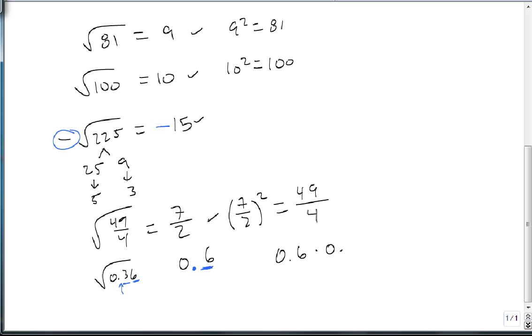And notice the 0.6 times 0.6, 6 times 6 is 36, and then move 1 decimal place. And we're back where we started.